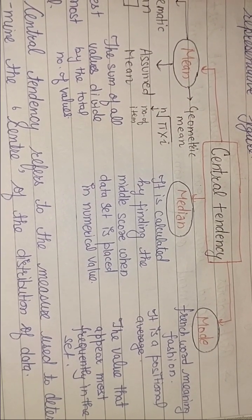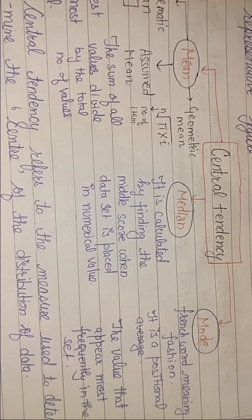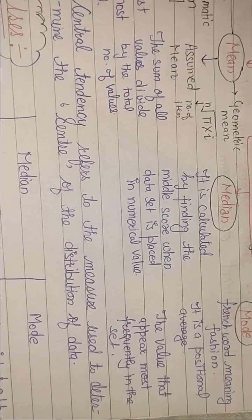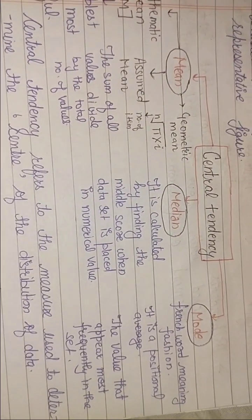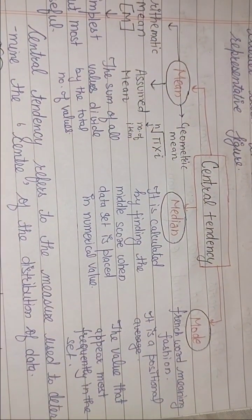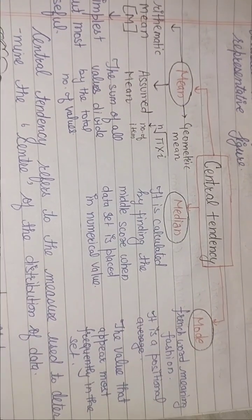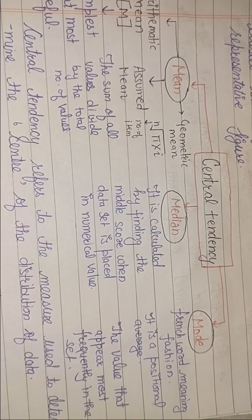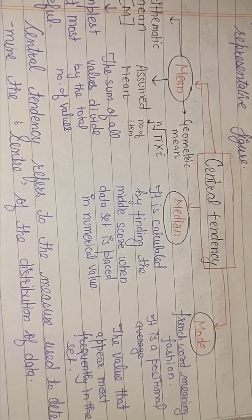If I talk about the mode, it comes from a French word which means fashion. Positional average hai. The value that appears most frequently in the set. Ki maan lijiye mere paas bohot saari values hai, 80 to 90 values rakh lijiye, toh unme maan lijiye mere paas baar baar 20 aa raha hai, toh jo sabse zyada representing hogi, usse mode maan ke chalungi.